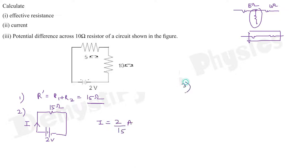Third part: find the potential difference across 10 ohm resistor of the circuit shown in the figure. In series combination, the current is same. Current is 2/15 ampere, and this 2/15 goes through both the 5 ohm and 10 ohm resistors. What is the current flowing through the 10 ohm resistor? 2/15 ampere.